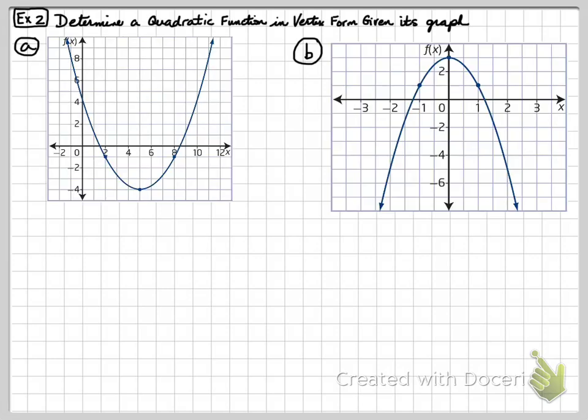Let's look at example 2. Determine quadratic functions in vertex form, given its graph. Well, this time, what we're going to do, in order to figure out the full equation, what we're going to do is we're going to take our equation and identify our points. We have a point PQ, which is our vertex. That tells me that P is 5, Q is negative 4.